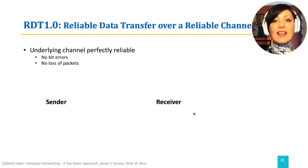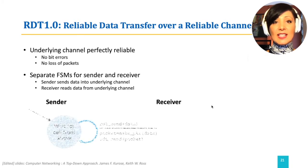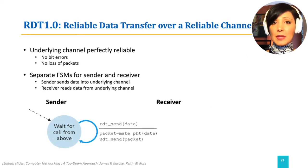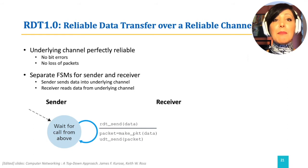We design the sending and receiving side FSMs. On the sending side, RDT accepts data from the upper layer. This is done through the function RDTSend, which is the event for this transition. The sender makes the packet for the data and sends it using UDTSend.